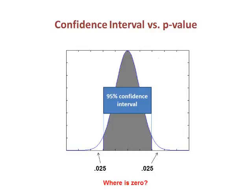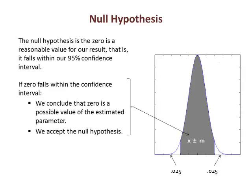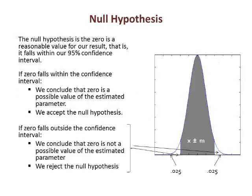Our concern is where is the value of 0. Elsewhere, we learned that due to sampling, we never know the true population mean, and we use the confidence interval as a hedge. This concern leads us to hypothesis testing. Our concern is whether we should accept or reject the null hypothesis. When we use the term hypothesis here, we do not mean the hypothesis that is derived from our research question. The null hypothesis is that 0 falls within the confidence interval, and therefore there is no relationship. If 0 is within the confidence interval, we accept the null hypothesis. If 0 is outside the confidence interval, we reject the null hypothesis.